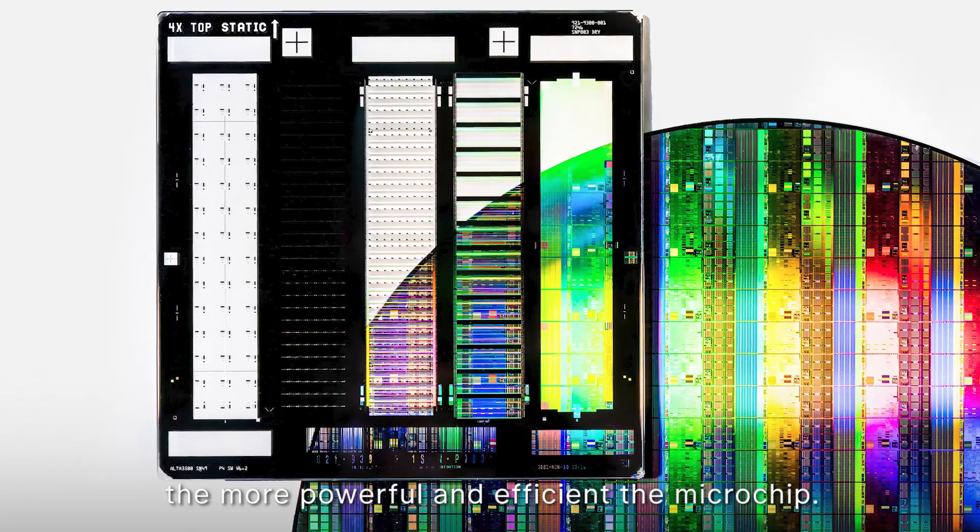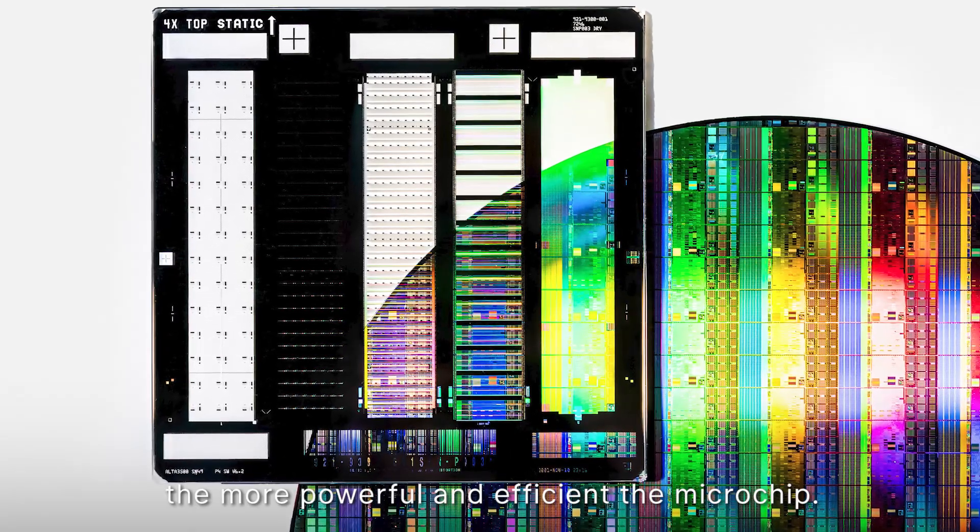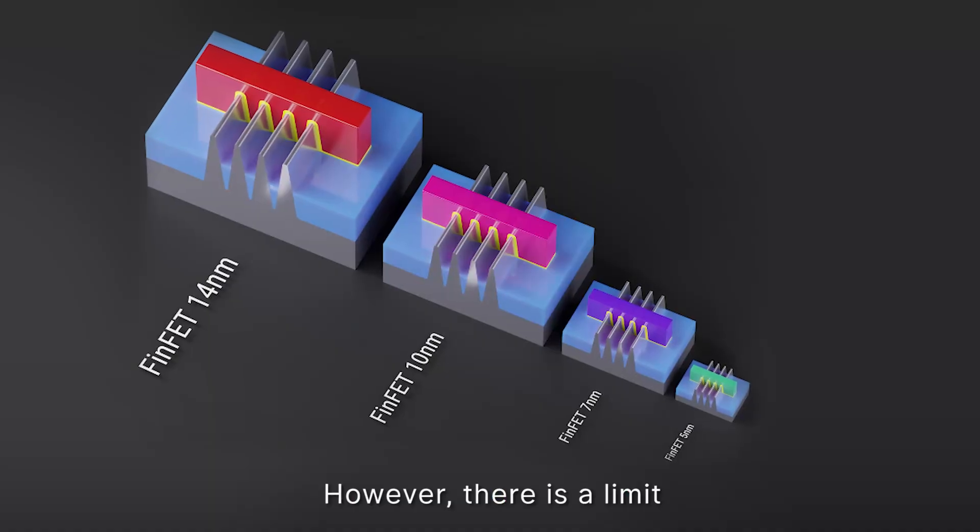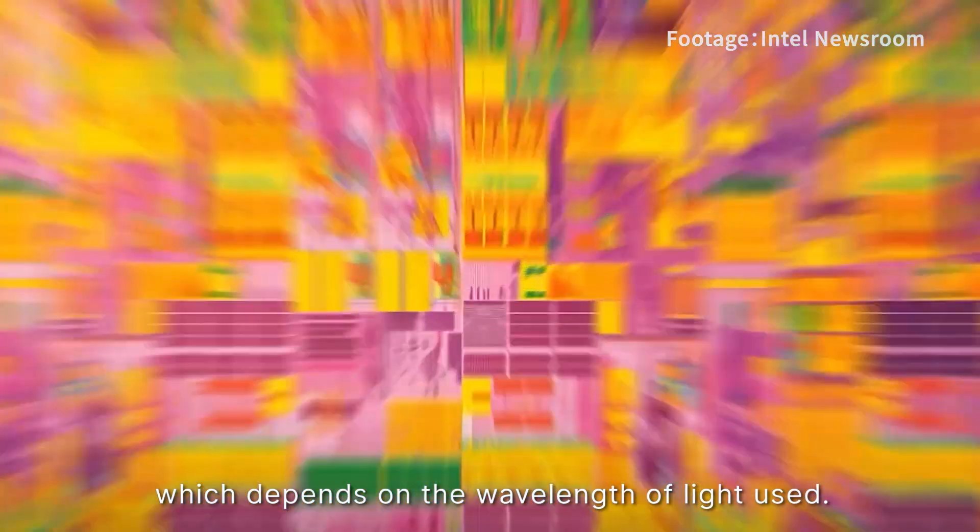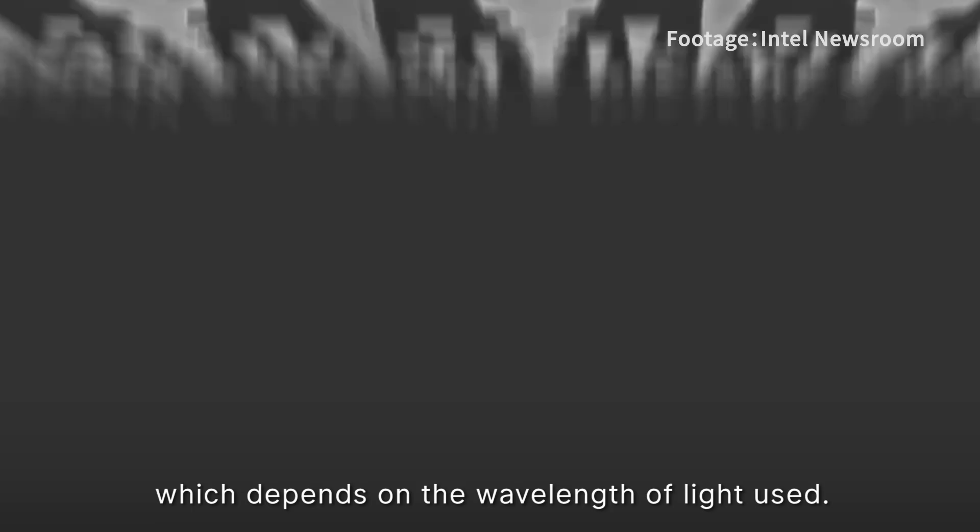The smaller the pattern, the more powerful and efficient the microchip. However, there is a limit to how small the patterns can be, which depends on the wavelength of light used. Shorter wavelengths allow for smaller patterns.